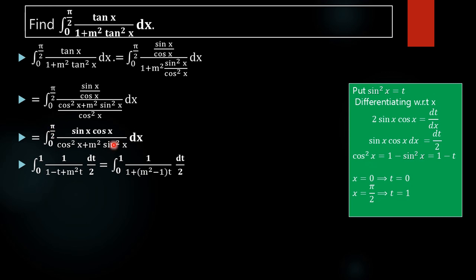After substitution, t ranges from 0 to 1. sin(x)cos(x) dx is replaced by dt/2, the denominator becomes (1 − t) plus m²t, which equals 1 plus (m² − 1)t. So we can rewrite this function as the integral from 0 to 1 of 1 divided by 1 plus (m² − 1)t, multiplied by dt/2, where m² − 1 is a constant.